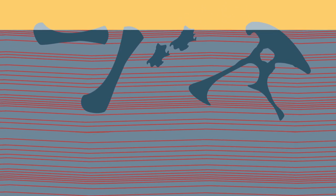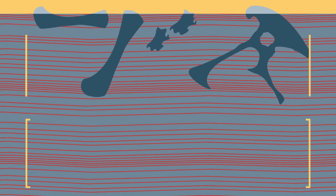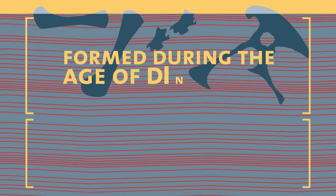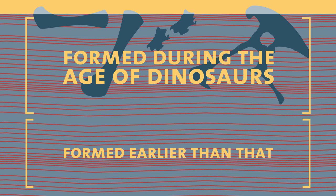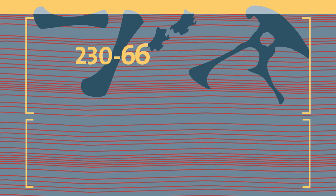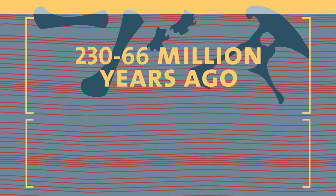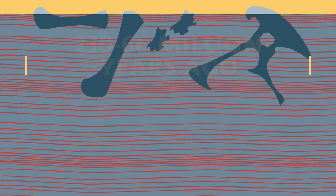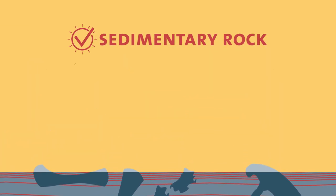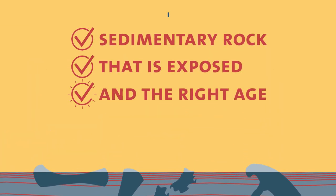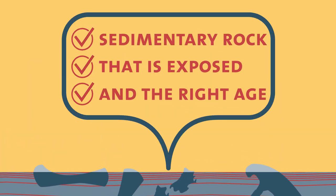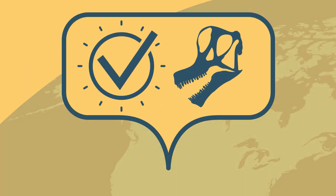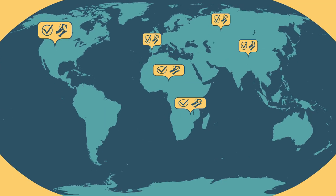The sedimentary rock layers need to have been formed while dinosaurs were alive, so that would be between about 230 to 66 million years ago. If a region ticks all these three boxes, then there's a good chance that you'll find some dinosaur bones in the area.